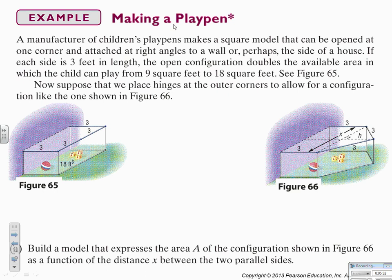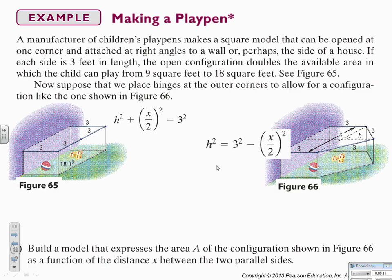Making a playpen: a manufacturer of children's playpen makes a square model that can be opened at one corner and attached at right angles to a wall or the side of a house. If each side is 3 feet in length, the open configuration doubles the available area from 9 square feet to 18 square feet. Now suppose we place hinges on the outer corners to allow for a pentagon-shaped configuration. We want to build a model that expresses the area of this configuration as a function of the distance x between the two parallel sides.